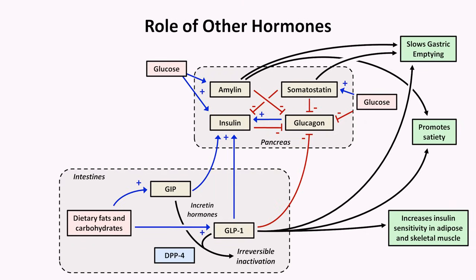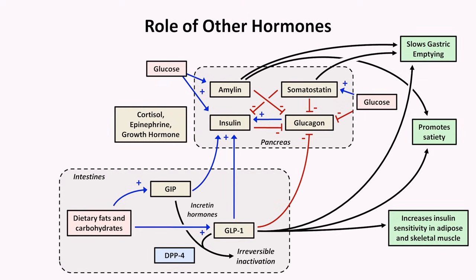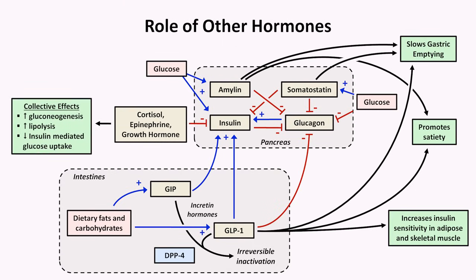So far, all of these ancillary hormones have largely been either supporting the general effects of insulin, or in the case of somatostatin playing more of a neutral role. However, there are three hormones that directly and indirectly antagonize insulin's actions. They are the so-called stress hormones: cortisol, epinephrine, and growth hormone. While each of these has more important primary actions, their general collective effect on metabolism is to decrease insulin secretion, increase gluconeogenesis, increase lipolysis, and decrease insulin-mediated glucose uptake, with a net consequence of hyperglycemia.